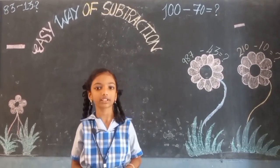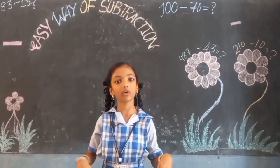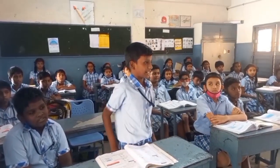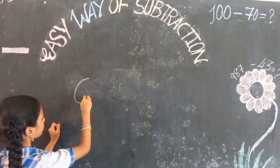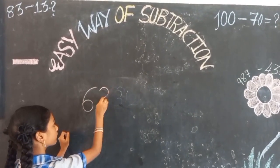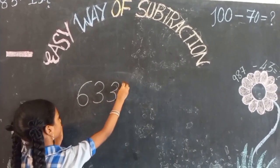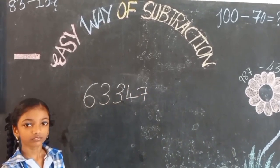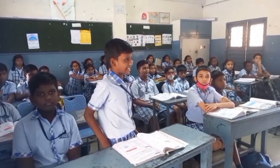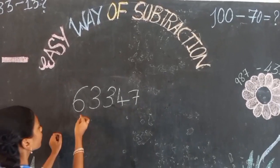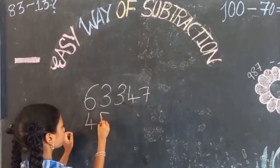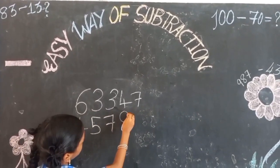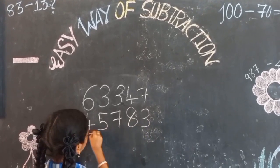In this method, we can subtract any number of digits. Friends, give me a sum in any number of digits. 63347 minus 45783.